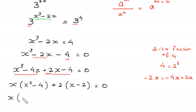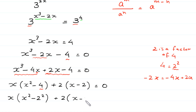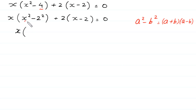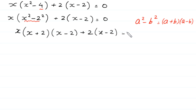Next, x times — we can write this 4 as 2 squared, so x times (x squared minus 2 squared), plus 2 times (x minus 2), equal to 0. According to the algebraic identity a squared minus b squared equals (a plus b)(a minus b), we factorize x squared minus 2 squared as (x plus 2)(x minus 2), plus 2 times (x minus 2) equals 0.